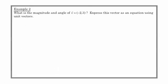So here's a little example. What is the magnitude and angle of this vector v, (-2, 3)? Express it as an equation and find the magnitude and the angle. So first of all, as an equation, we have a is equal to negative 2 and b is equal to 3.